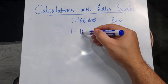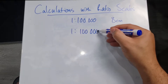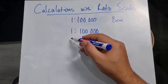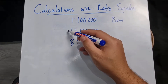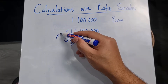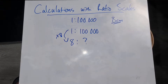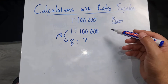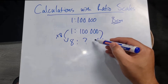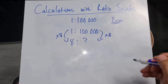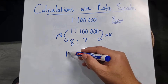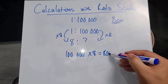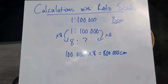I've got my ratio of one is to 100,000 and I know I've got my eight centimeters which they've given me. So I'm going to put my eight down here. To get from one to eight, I had to multiply by eight. Whatever I've done to one side I've got to do to the other side, so I'm going to multiply by eight as well. That 100,000 multiplied by eight is going to give me 800,000 centimeters.